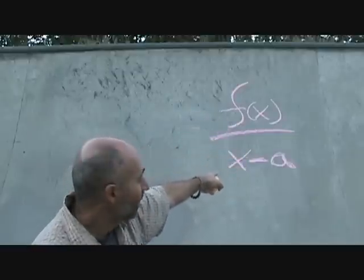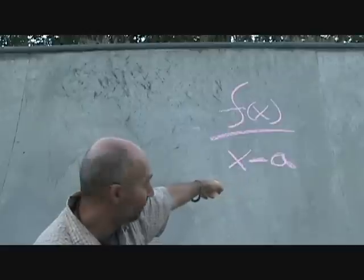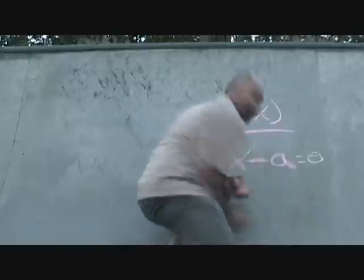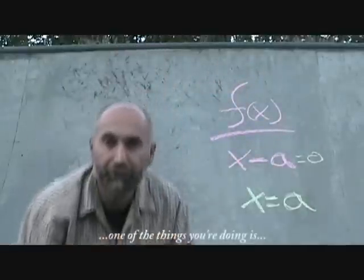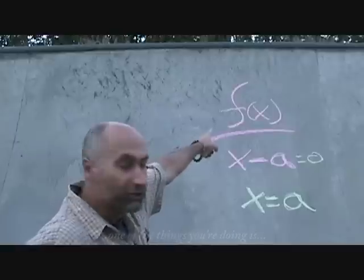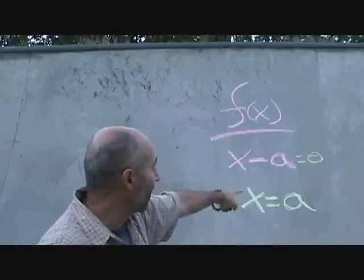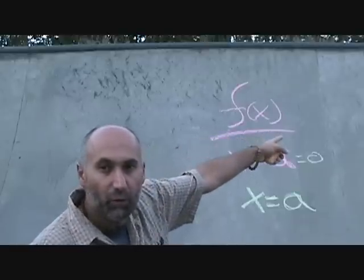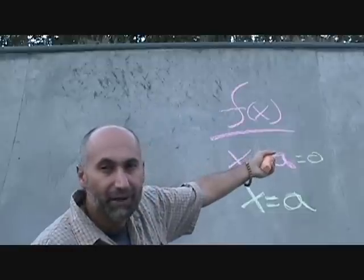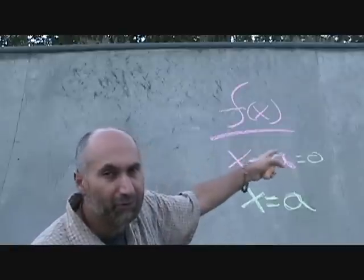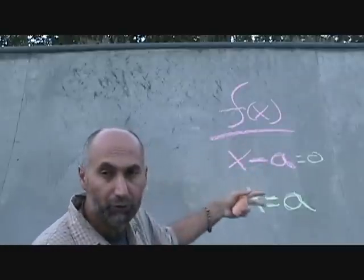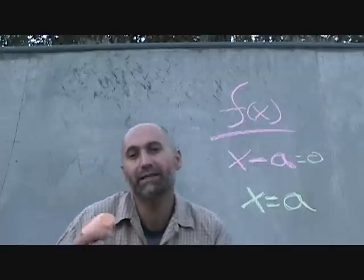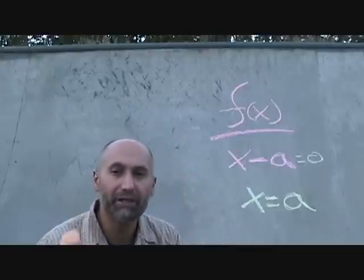What we're going to focus on for synthetic division is division of the form where the denominator is just x minus a, where a is a constant. If you have x minus a in the denominator, you can set that equal to zero and bring the a over — so what you're doing is checking what your function equals when x equals a, solving for f(a), and the answer becomes your remainder. We talked about this a lot in polynomial long division.